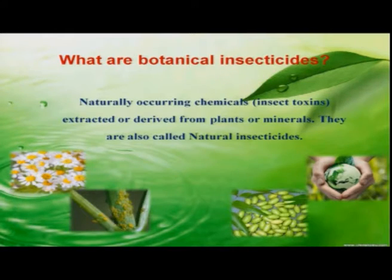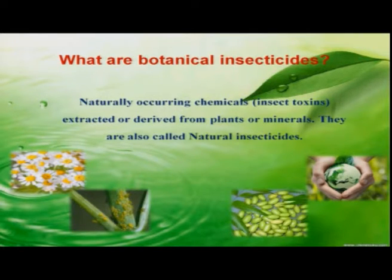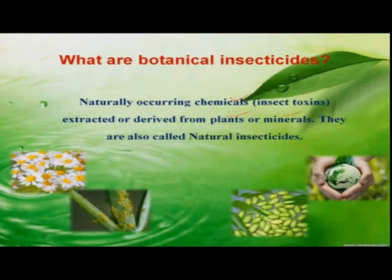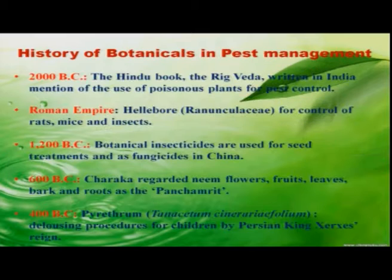Before that, let us see what exactly botanical insecticides are. These are naturally occurring chemicals derived from plants, or sometimes even minerals. Sometimes they are also called natural insecticides.